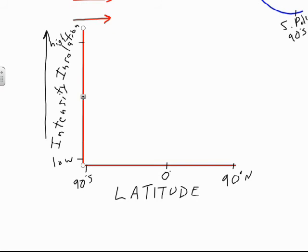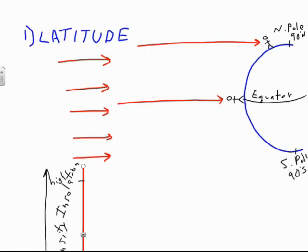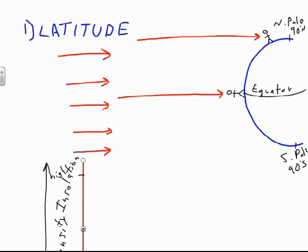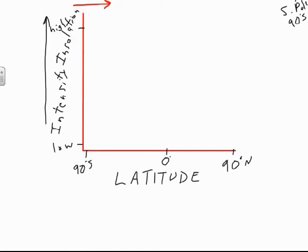If we were to graph this, we would see a relationship where the highest intensity happens at the equator — the greatest intensity of insolation occurs at the equator. The lowest intensity is going to happen at both the north and south poles. Our graph would show the lowest intensity at the south pole and the north pole, and the highest intensity at the equator.